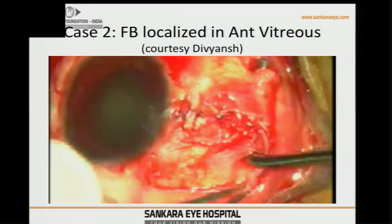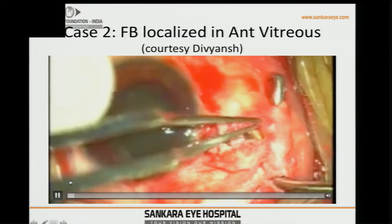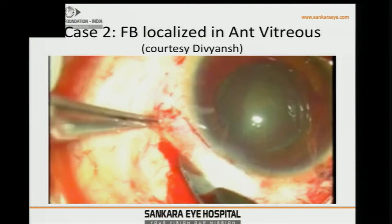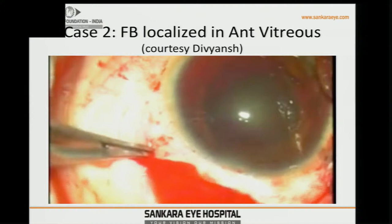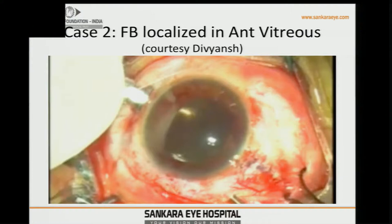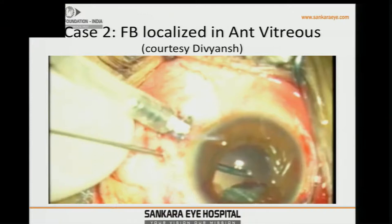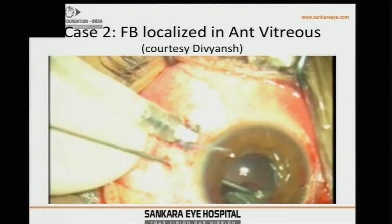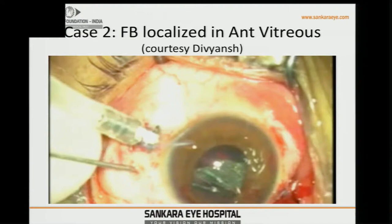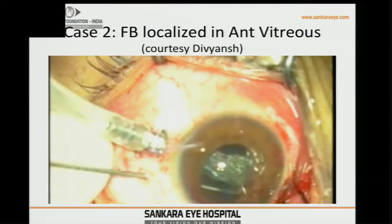Sometimes a penetrating foreign body may go up to the extent of the muscle insertion, cutting through it. This case had a large granite piece inside — the patient was a stone cutter. The primary approach was retrieval through the anterior segment: a scleral tunnel was placed, and vitreous adherents around the foreign body were carefully removed to make it free.